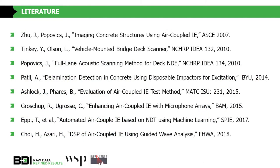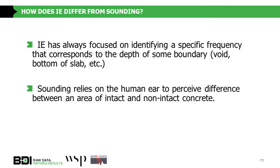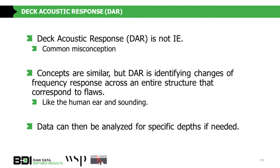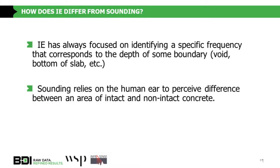After doing research and due diligence to make sure we weren't recreating the wheel, we developed this method called Deck Acoustic Response. Impact echo is always focused on finding an exact depth and a horizontal crack. We're doing a different analysis methodology — identifying where flaws are, with the raw data available to do traditional impact echo if needed. With 12 microphones across a 12-foot-wide deck at one per foot, over a 10,000-foot structure, there's an enormous amount of data to analyze.